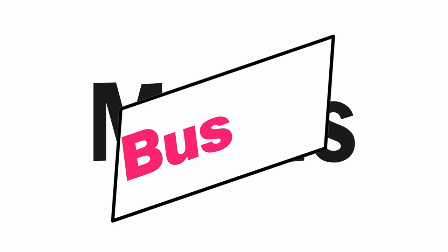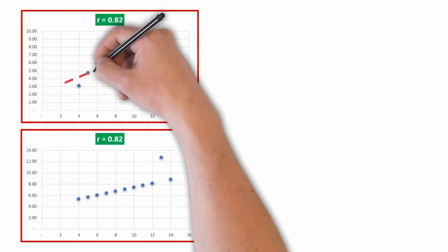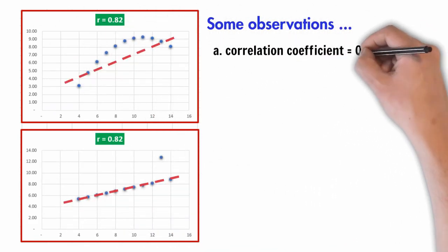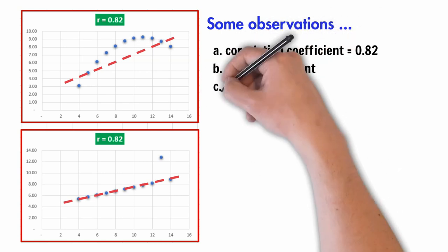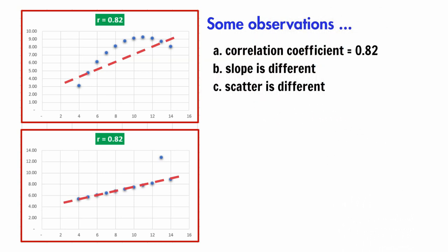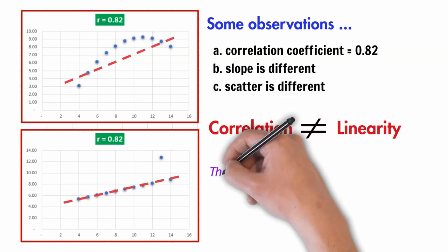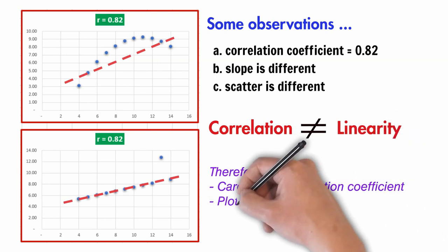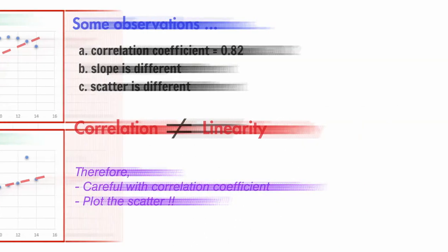These observations lead us to bust some myths that get formed around correlation. Myth number one. In the associated graphs, we see that both have a correlation coefficient of 0.82. Both have a slope with different magnitudes. However, the scatter in the first one is different from that in the second one. It therefore means that correlation indicates tendency of linearity in the association. However, it need not imply linearity. So we should always be careful with correlation coefficient. It is best practice to always plot the scatter diagram of the data.